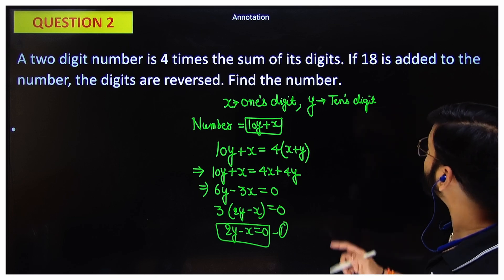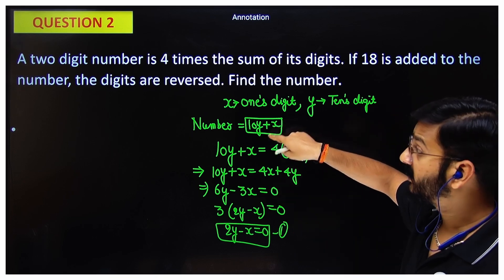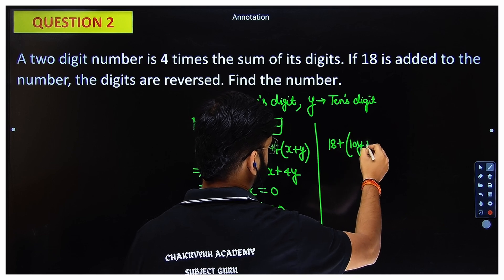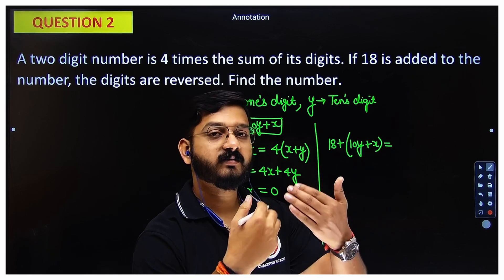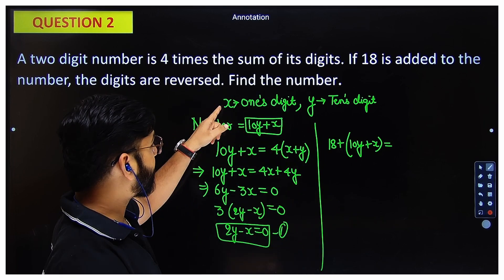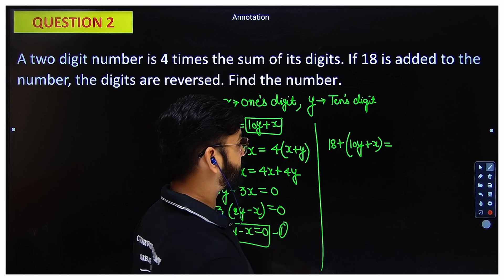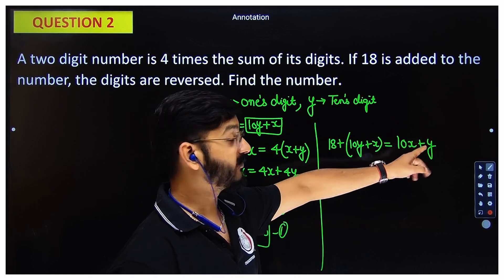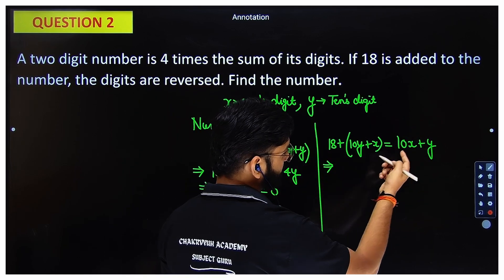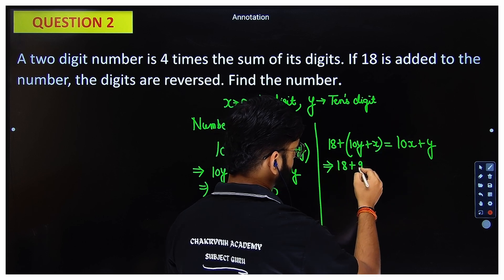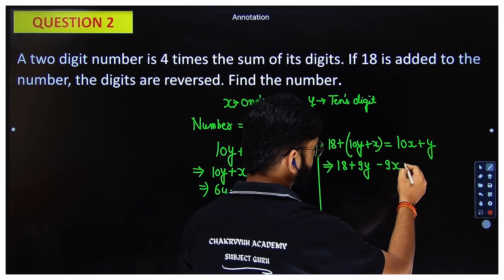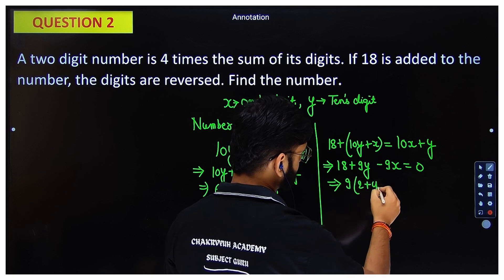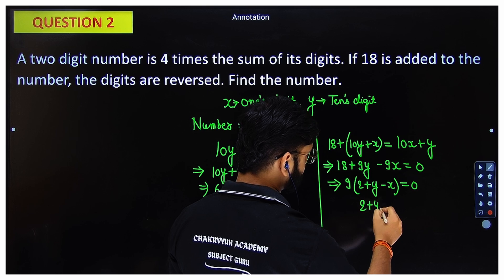The second condition: if 18 is added to the number, the digits are reversed. So (10x plus y) plus 18 equals the reversed number, which is 10y plus x. Simplifying: 10x plus y plus 18 equals 10y plus x, giving 9x minus 9y plus 18 equals 0. Taking 9 as common: x minus y plus 2 equals 0.